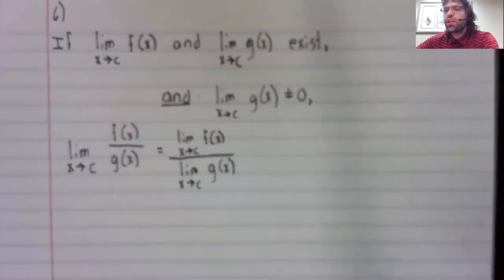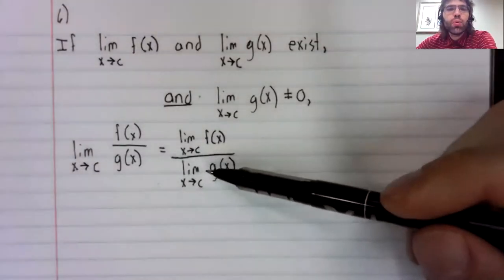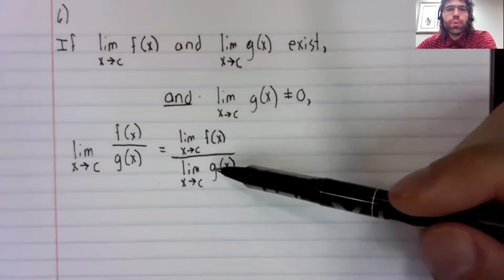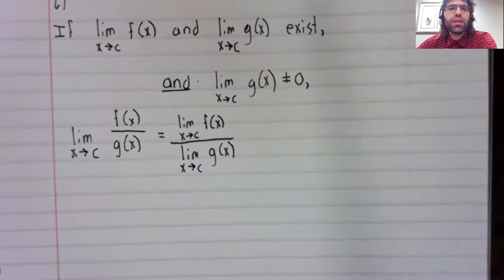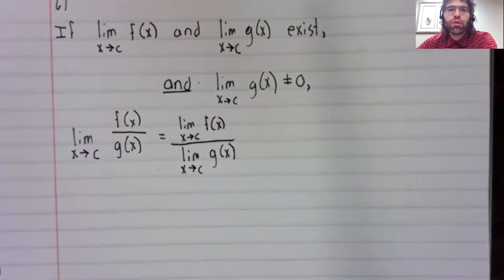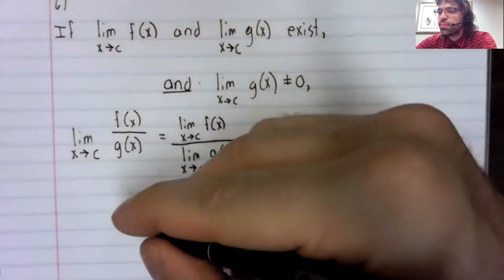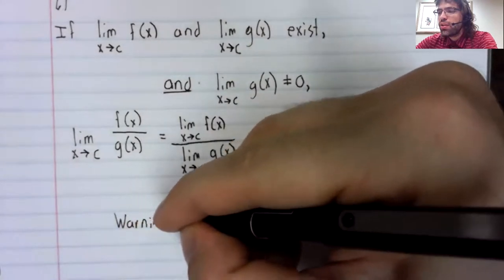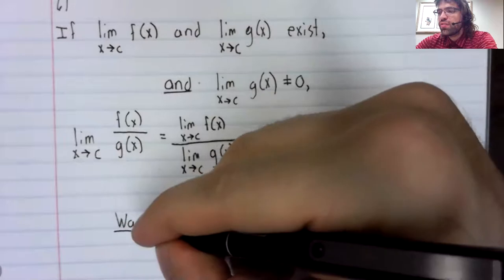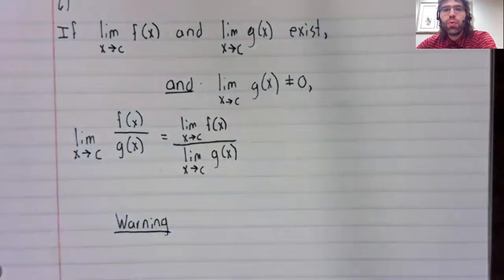I was saying that if this limit equals zero, we can't use this rule because it would give us a division by zero error. And let me end this video with a warning.